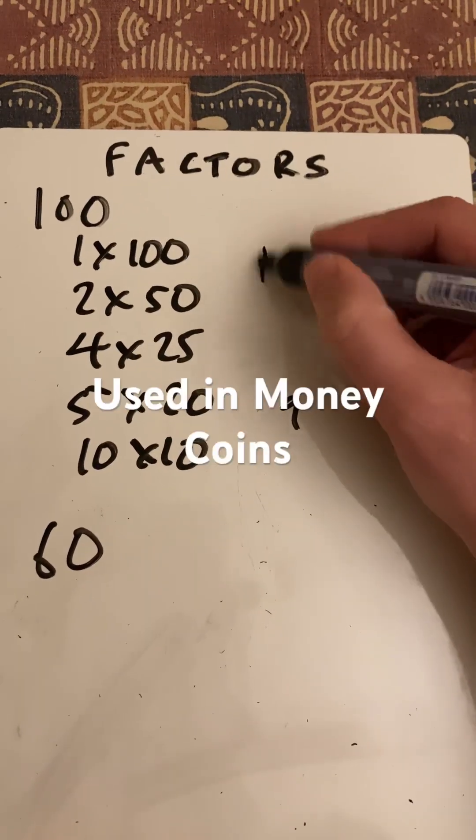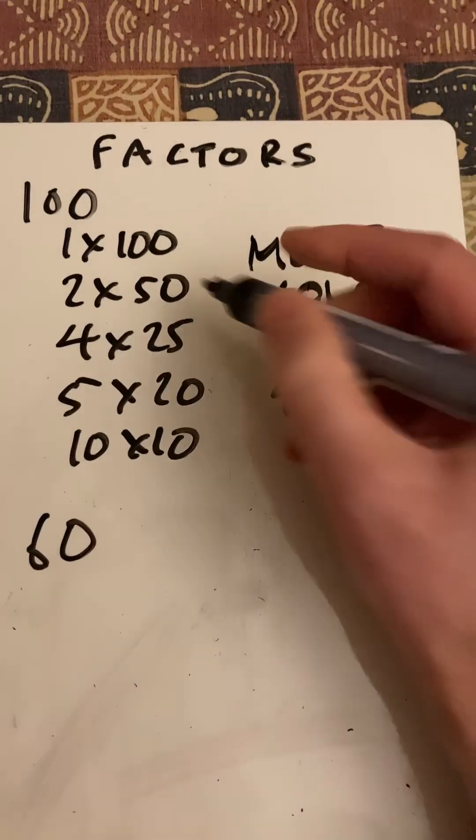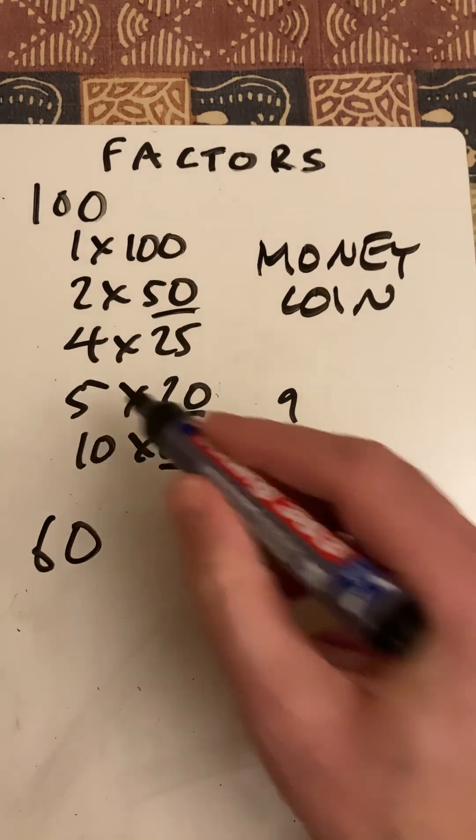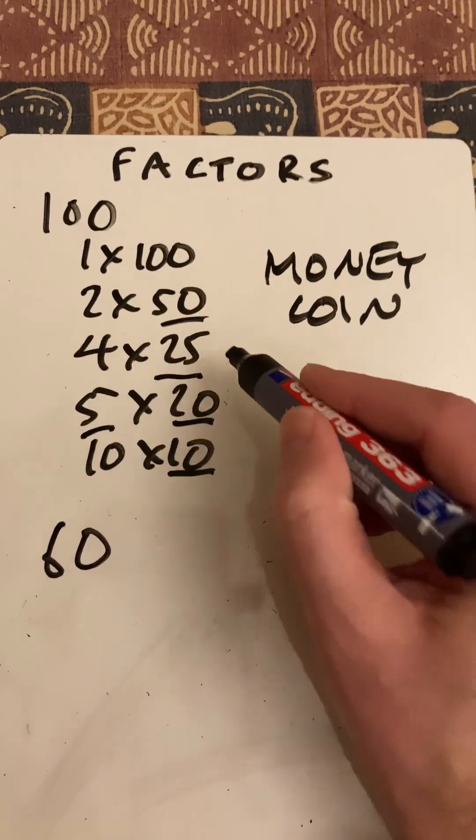We have 9 different factors and we use this in our money. We often have coins like a 50p coin, 20p coin, 10p, 5p, and in America you have the U.S. quarter.